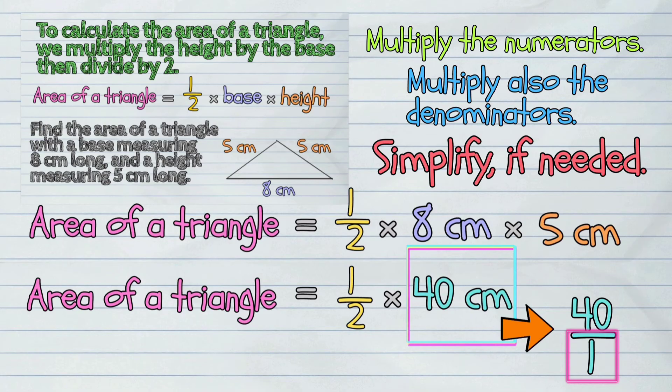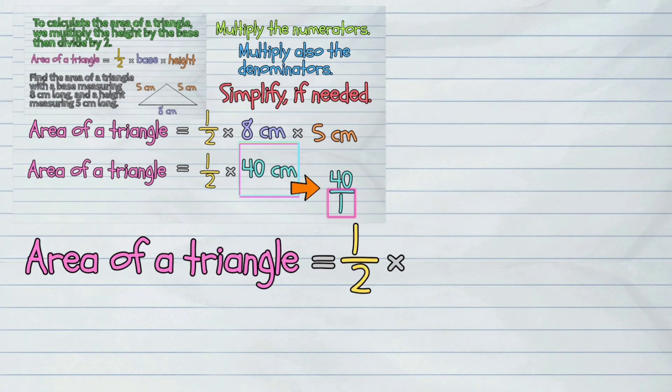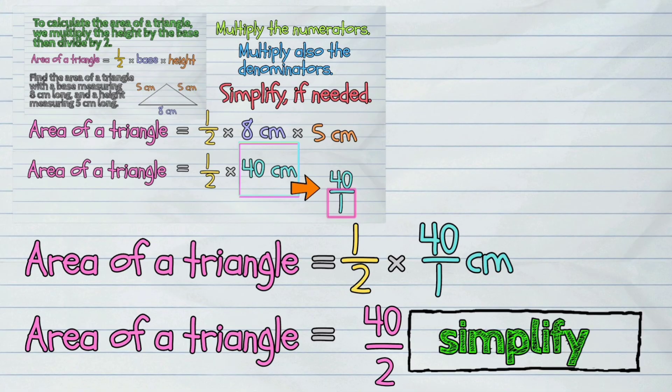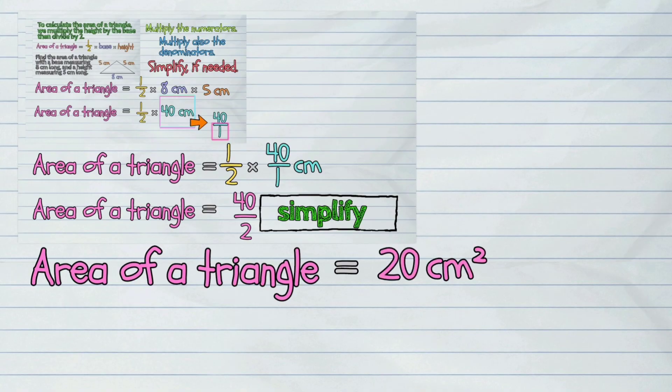In this case, it would be one-half times forty over one. So, one times forty is forty, and two times one is two. So, we have here forty over two. If we simplify this, we will divide forty by two, which gives us the final answer of twenty.